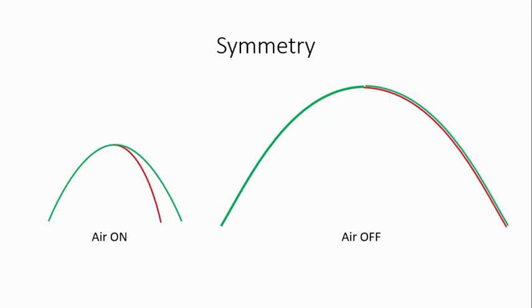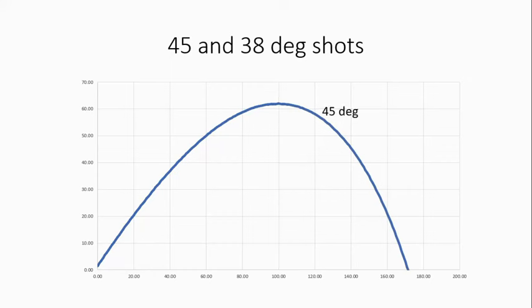There is still another difference: most people think that the longest shot is under 45 degrees — which is true, but only in a vacuum. In the air situation it is not really so. This is a 45-degree shot in the air situation, and this is some 38-plus-degree shot in the air situation — and you can see it is a little bit longer than the 45-degree shot.